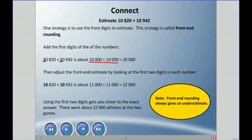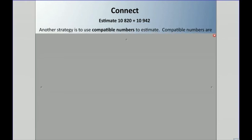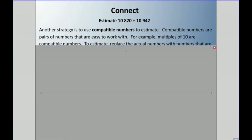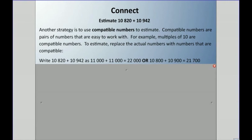Let's talk about another method: compatible numbers. Compatible numbers are numbers that are easy to work with — for example, multiples of 10. To estimate, replace the actual numbers with compatible ones. So we could write 10,820 as 11,000 and 10,942 as 11,000.